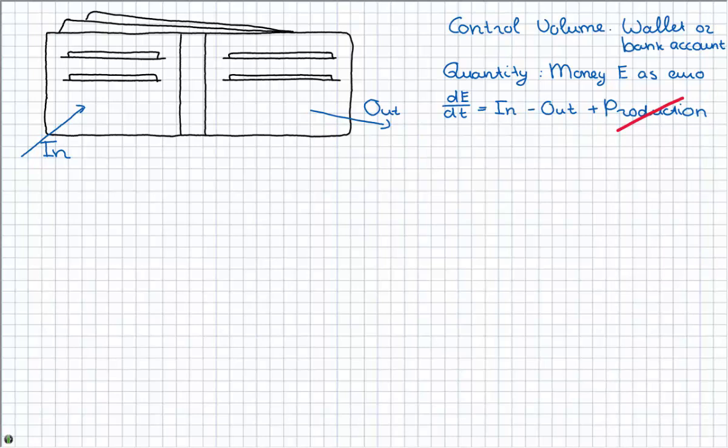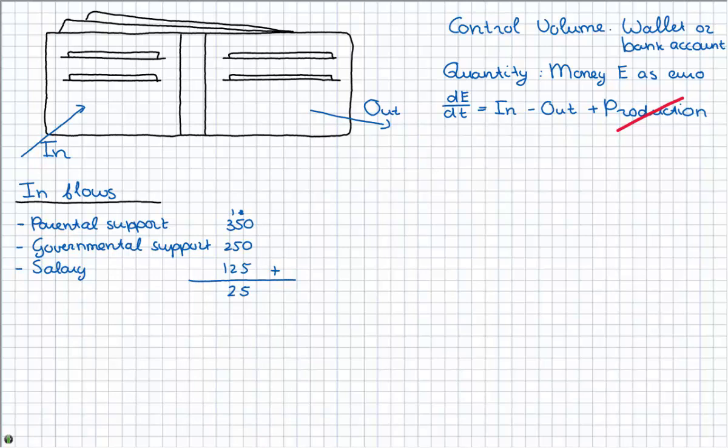Well the question was what are the inflows of this wallet? Well there were some given in the text. So we have parental support, governmental support, and also the salary our student is making this month. And if we add this all up we will get 725 euros per month.